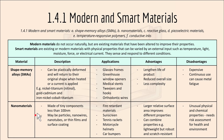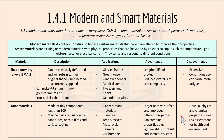Nano materials are made of tiny components less than 100 nanometres. They may be particles, nano wires, nano tubes or thin films and surface coatings. Applications could be fire-retardant materials, sunscreen and tennis rackets. An advantage is that they have a large relative surface area, improve different properties and can combine with other materials. A disadvantage is that they have unusual physical and chemical properties and require a risk assessment for health and environment.